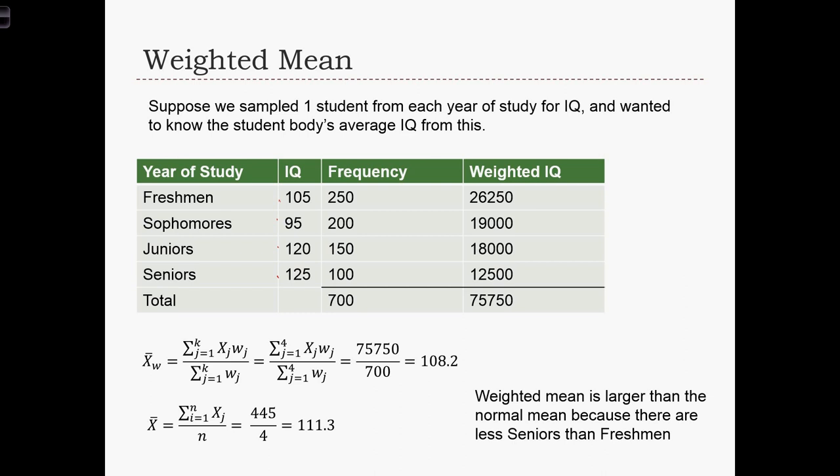Now, we could simply take the average of these four IQs. And if we do that over here, we find that the average is equal to 111.3. But why isn't that a good estimator of the average IQ of students in the program? The reason is that each of these IQs pertains to a different kind of student. And we have different numbers of students in each year.